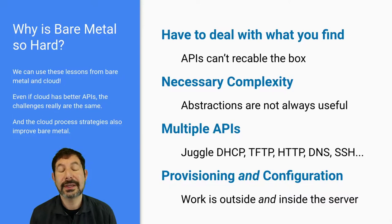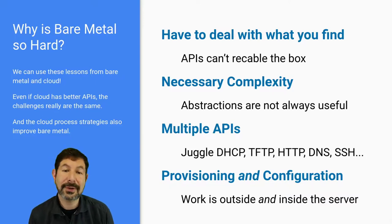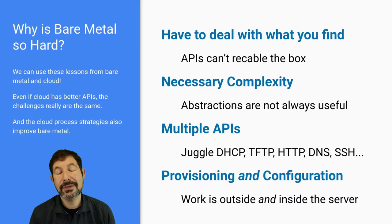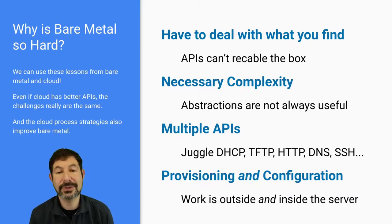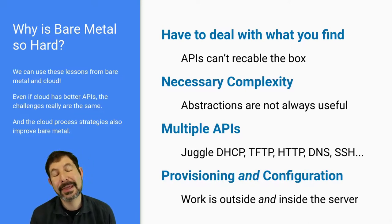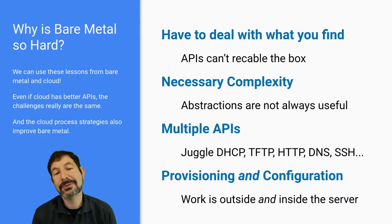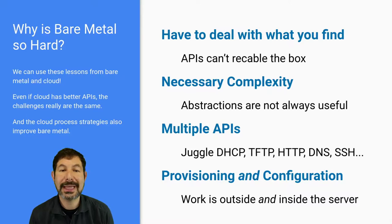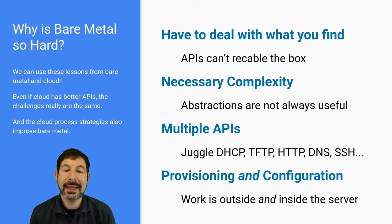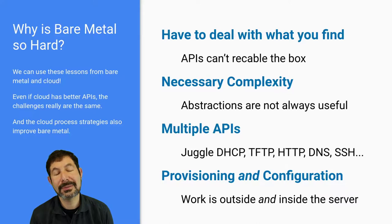So why is this harder? You can't use APIs to re-cable a box — you have to take things as they come. Bare metal is what it is: you get what you get. The other important thing is necessary complexity. Abstractions are not always helpful, especially in bare metal, where you actually have to know the enumeration of drives or which NIC is cabled to which port. That complexity is something you have to cope with. You want to remove complexity where you can, but if you oversimplify things, you make your job a lot harder.